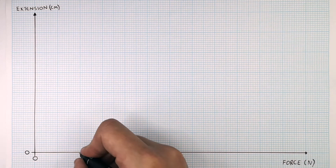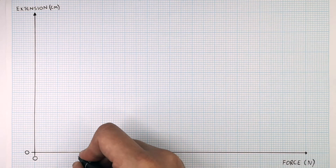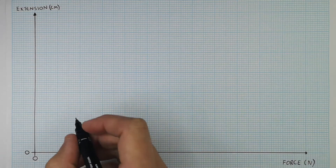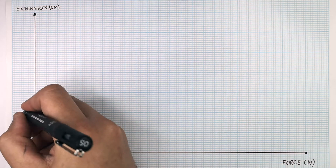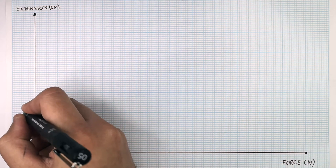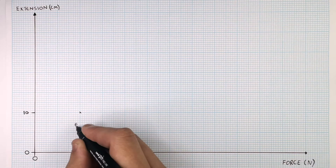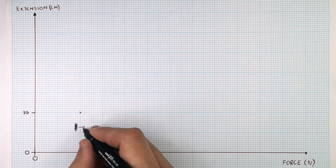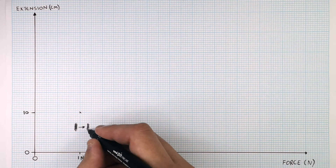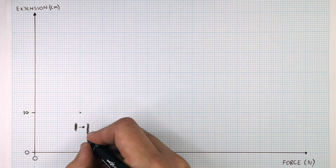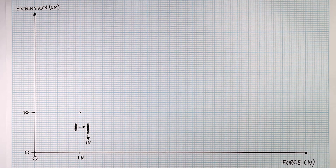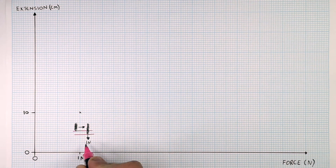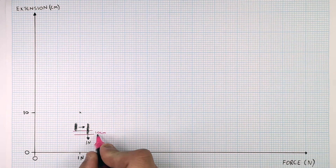So if we apply a 1 newton force to this spring, it's going to extend the spring by 10 centimetres. This spring here has been extended because a force of 1 newton has been applied to it, and the extension is 10 centimetres.